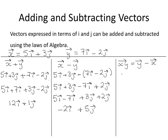So filling in for vector y, you have 7i minus 2j minus, again put in a bracket before you fill in for vector x, which is 5i plus 3j.